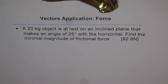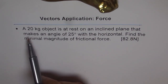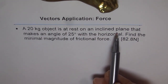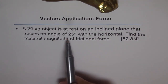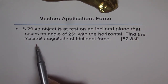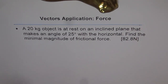We will explore forces on an inclined plane with the help of this example. I gave you this example earlier when introducing the topic, along with the answer. A 20 kilogram object is at rest on an inclined plane that makes an angle of 25 degrees with the horizontal. Find the minimal magnitude of frictional force.